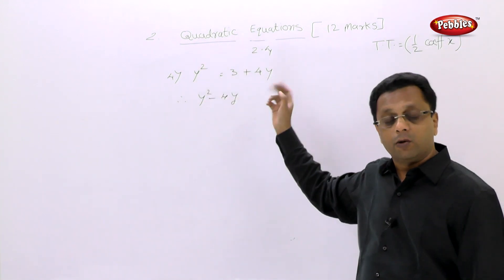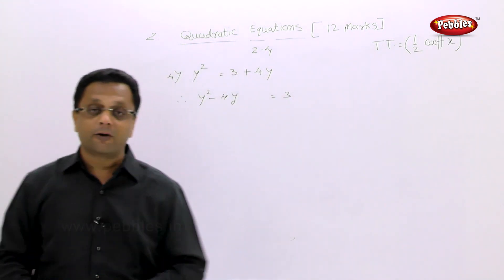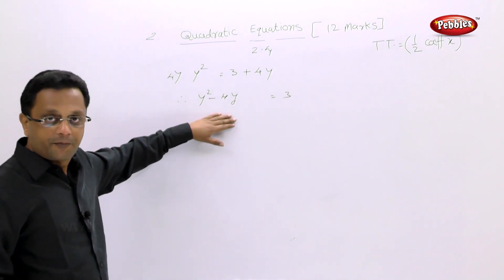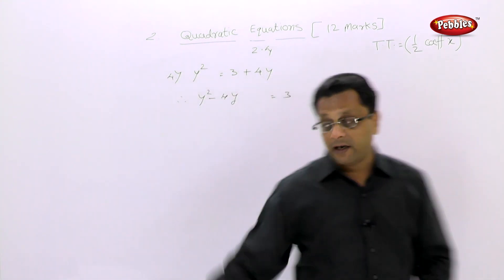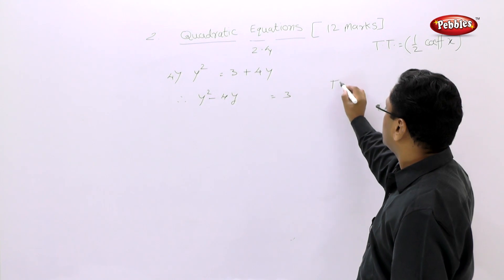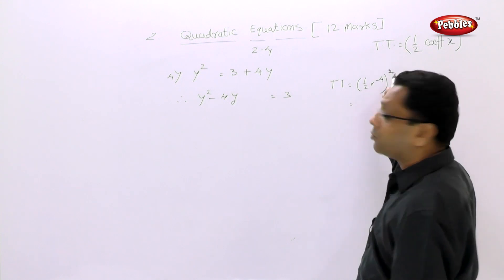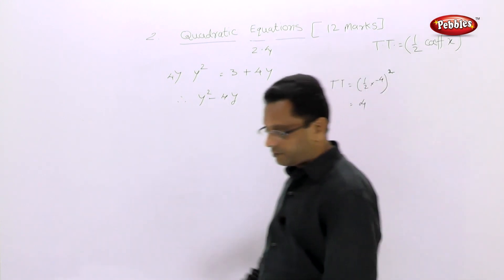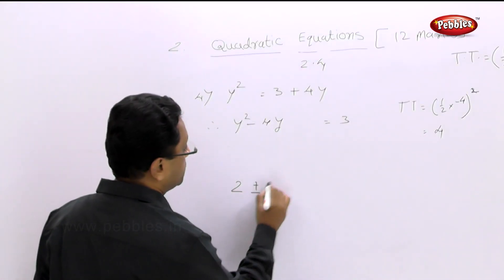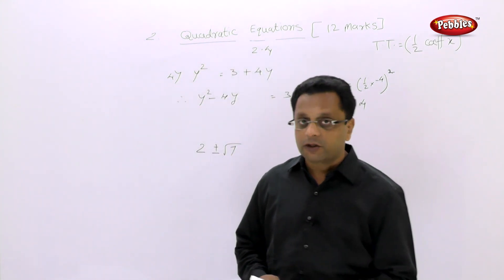From y² - 4y = 3, find the third term: half of minus 4 squared = 4. Add 4 to both sides and find the answer. The answer is 2 ± root 7, that is, one root is 2 + root 7 and the second is 2 - root 7.